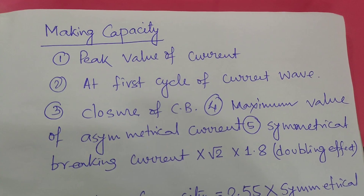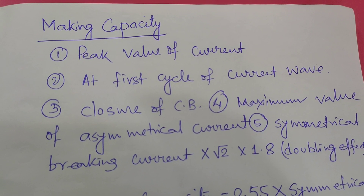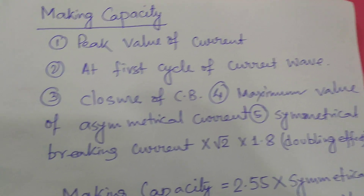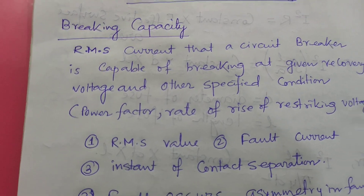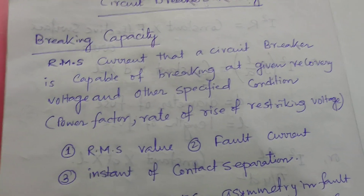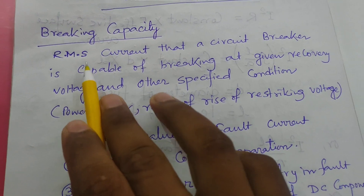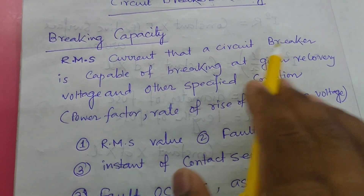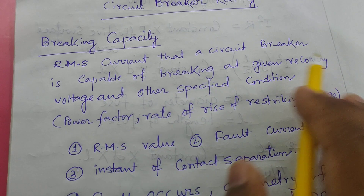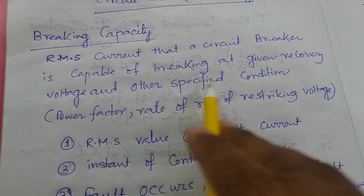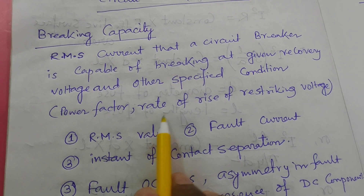So Closing and Making is the same concept. It has a capacity — we will discuss the Making Capacity of the Circuit Breaker. Now let's start about the Breaking Capacity of the Circuit Breaker. It is the RMS current that a Circuit Breaker is capable of breaking at a given recovery voltage and under other specified conditions such as power factor.